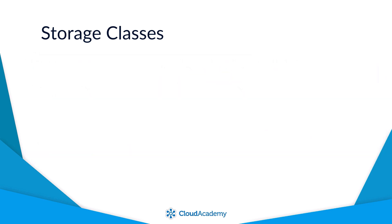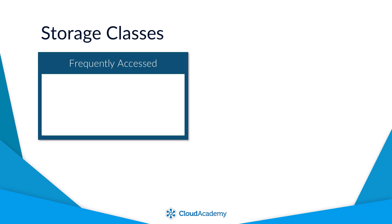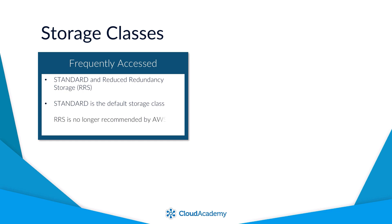For data that is accessed frequently, you have two options: Standard or Reduced Redundancy Storage (RRS). The default storage class is Standard unless you specify otherwise. The Reduced Redundancy storage class is an older option and is no longer recommended by AWS, as the Standard storage class is now more cost effective and offers greater durability.